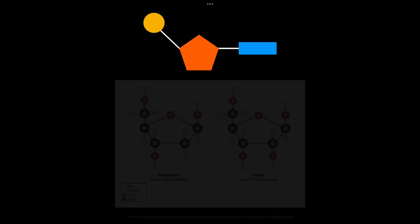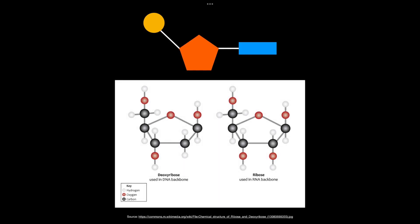We can describe this directionality of the strands based on the carbons found in the pentose sugar. We can number those carbons, so here you can see the carbons being labeled as carbon number 1, 2, 3, 4, and carbon number 5, and we can do this in both deoxyribose and ribose because they're both pentose sugars.